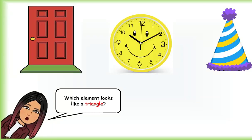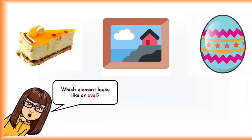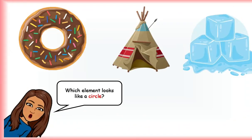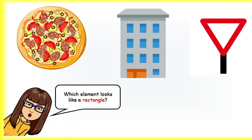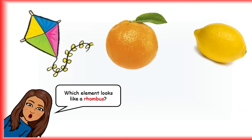Which element looks like a triangle? Which element looks like an oval? Which element looks like a circle? Which element looks like a square? Which element looks like a rectangle? Which element looks like a rhombus?